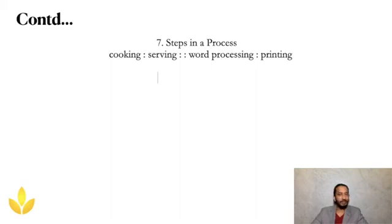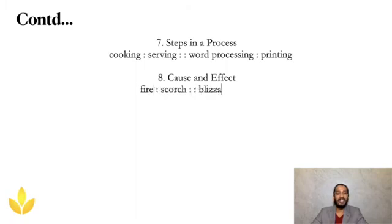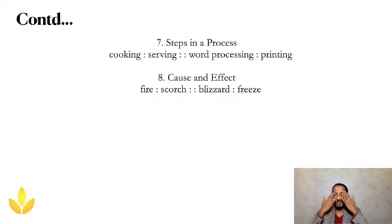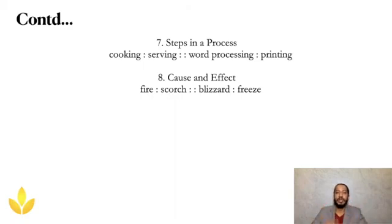Cause and effect — if you cause something, it leads to an effect. It can be natural, man-made, accidental, or deliberate. Fire is to scorch as blizzard is to freeze. Fire is the cause — it can leave scorch marks on walls, scorch your skin or eyes. A blizzard is always cold, so a blizzard can freeze you. So fire is to scorch as blizzard is to freeze.